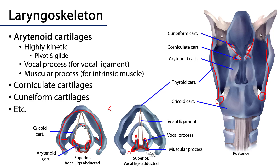Depending on what the arytenoid cartilages are doing, the vocal folds can either abduct — so as to produce a maximally patent airway — or they can adduct, bringing the folds into close association with one another for phonation.